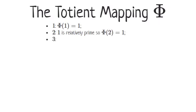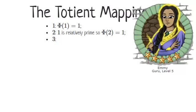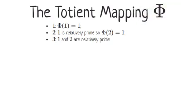Now let's consider Phi of three. Emi, what natural numbers less than three are relatively prime to it? Well, one obviously, and two. Correct. There are two such numbers, and so Phi of three equals two.